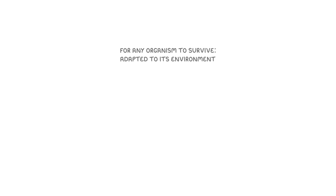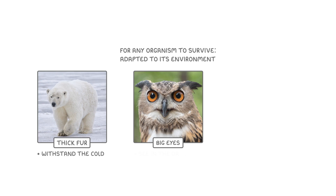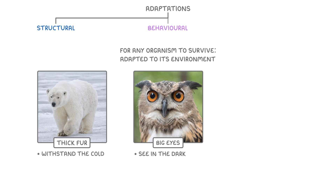In order for any organism to survive, it has to somehow be adapted to its environment. So this could be a polar bear having really thick fur to help it withstand the cold, or the big eyes of an owl that allow it to see in the dark. Because scientists love categories, they've put these adaptations into three different groups: those that are structural, behavioural, and functional.